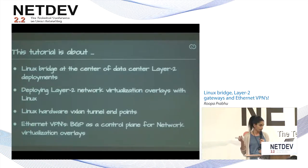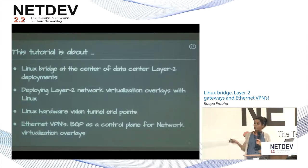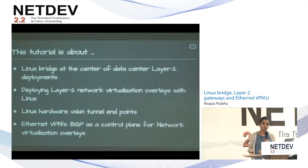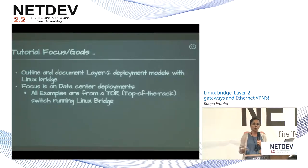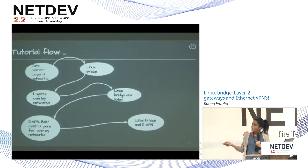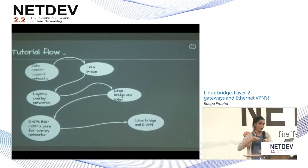VXLAN tunnel endpoints for overlay, for stretching L2 networks across data centers and across racks or pods. Ethernet VPN is a very hot technology in data center networking today. It's basically using BGP, the routing protocol, for network virtualization overlays. This tutorial gives perspective on all the work done in the kernel, in bridge and VXLAN, focusing on use cases from a TOR switch. The flow covers data center networks, Linux bridge, overlay networks, Linux bridge with VXLAN and EVPN.